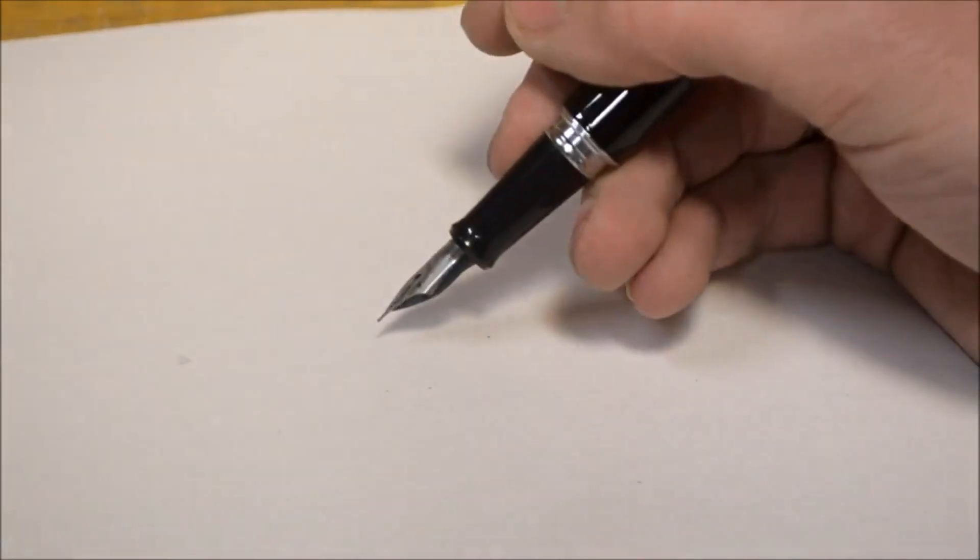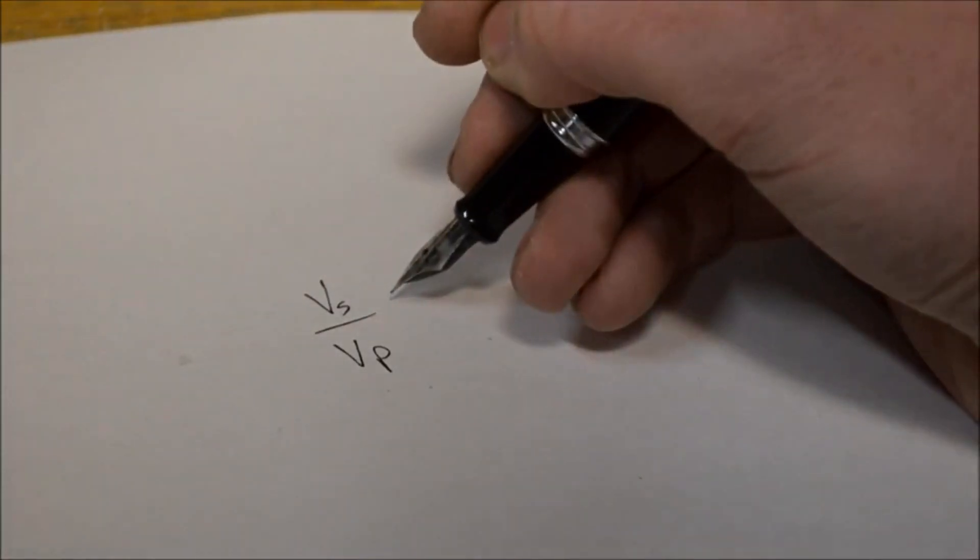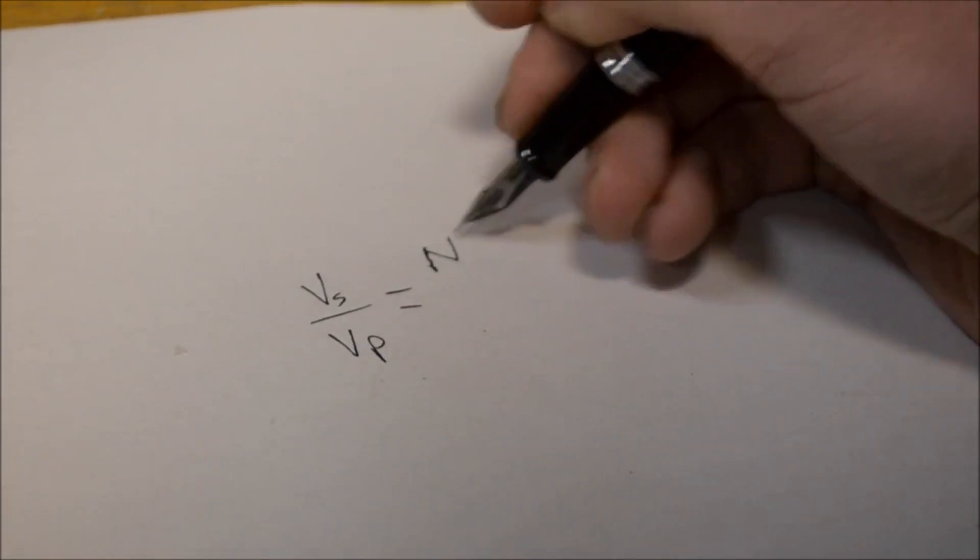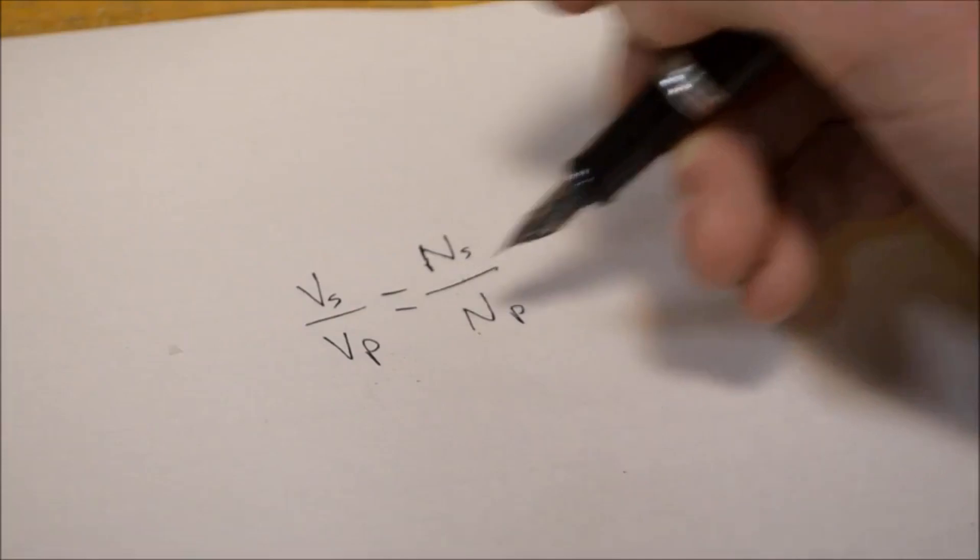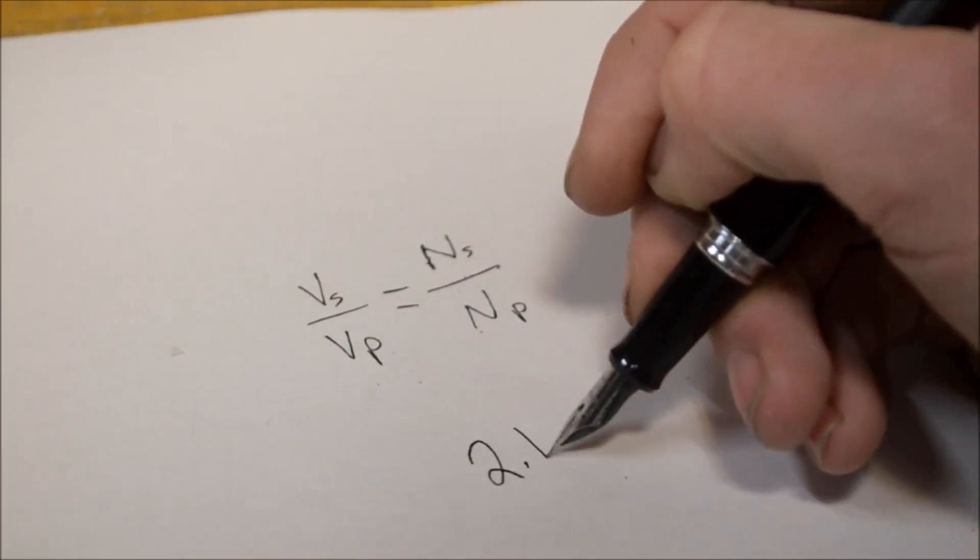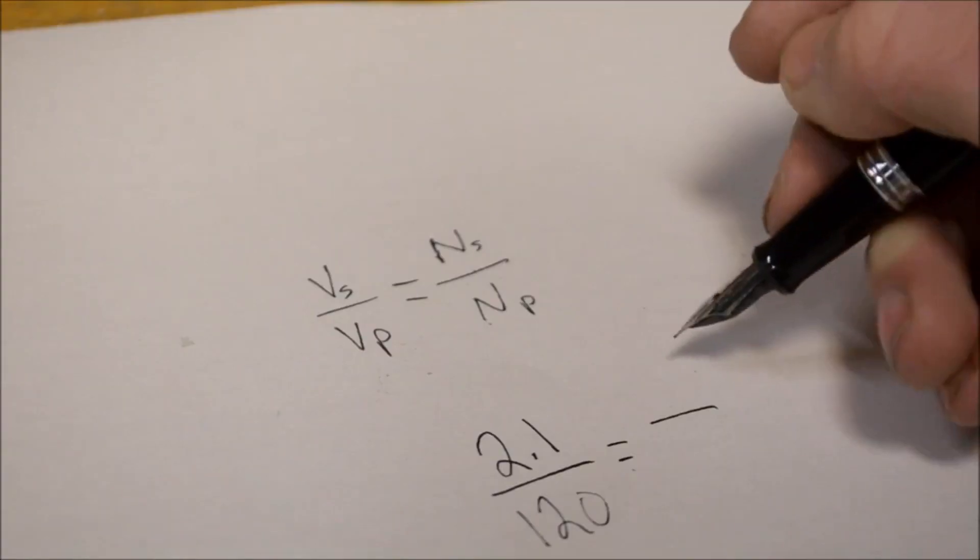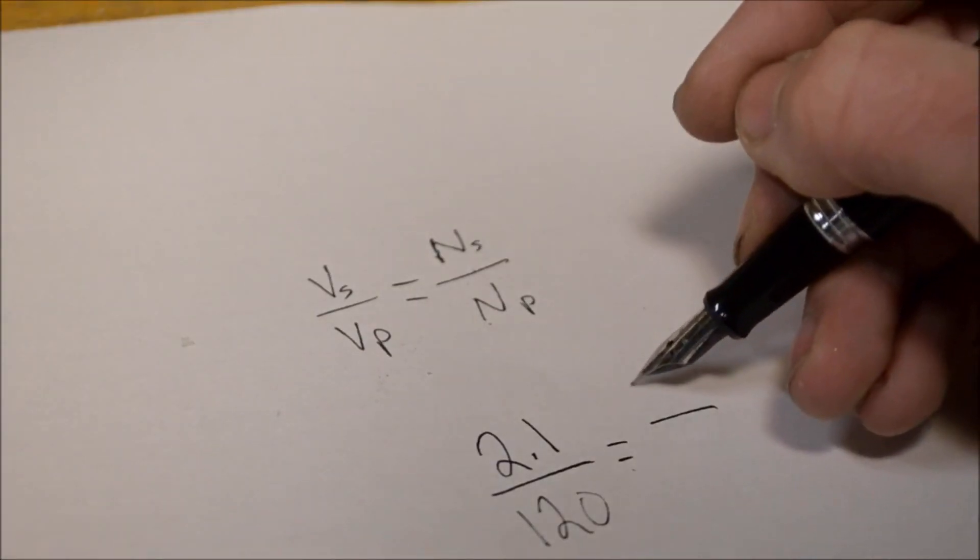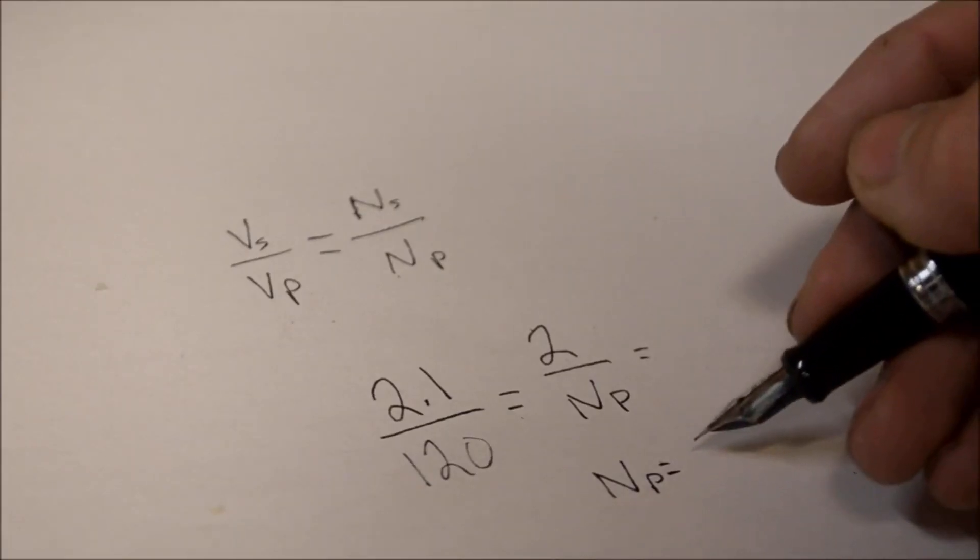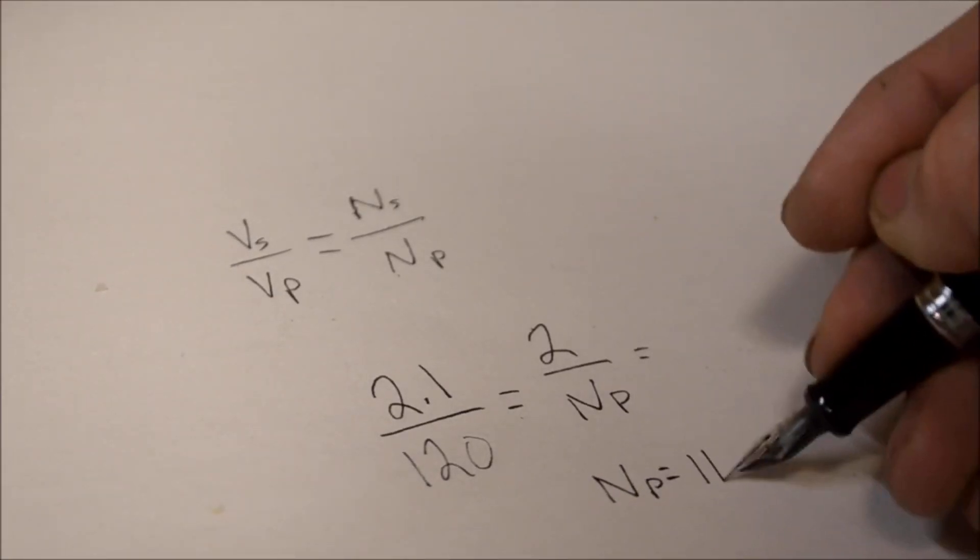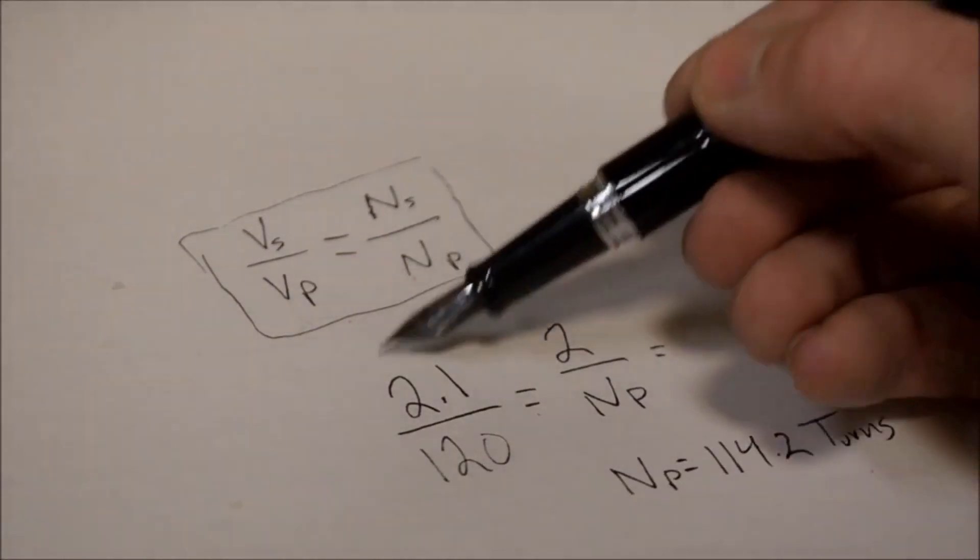Now as for transformers, a good formula to remember is going to be this: the voltage of the secondary divided by the voltage of the primary is going to be equal to the number of turns on the secondary coil divided by the number of turns on the primary coil. So basically applying this to our transformer, we had on the secondary coil we're getting about 2.1 volts and the amount of voltage going in was about 120 volts. If we set this equal to the number of turns on the secondary, which was about 2, we can then calculate the number of turns on the primary. Solving for the number of turns on the primary, we'd get somewhere around 114.2 turns. So using this formula you can design your very own transformers in order to get a desired voltage.